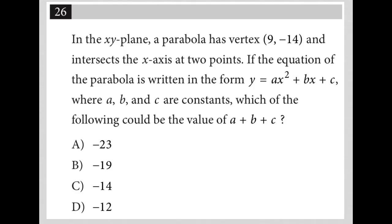This question says in the xy-plane, a parabola has vertex (9, -14) and intersects the x-axis at two points. If the equation of the parabola is written in the form y = ax² + bx + c, which is our quadratic equation form for a parabola, where a, b, and c are constants, which of the following could be—very important, could be, not must be—the value of a + b + c?